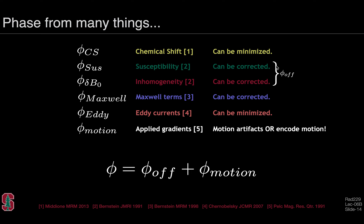If we can minimize and or correct most of these sources of off-resonance, then the total phase may just be the sum of the off-resonance phase and the motion-induced phase. There are a variety of methods where we can estimate the off-resonance phase and thereby only be left with a motion component to the phase. That hints at how we might be able to do quantitative imaging by encoding motion information in the phase of the complex magnetization.